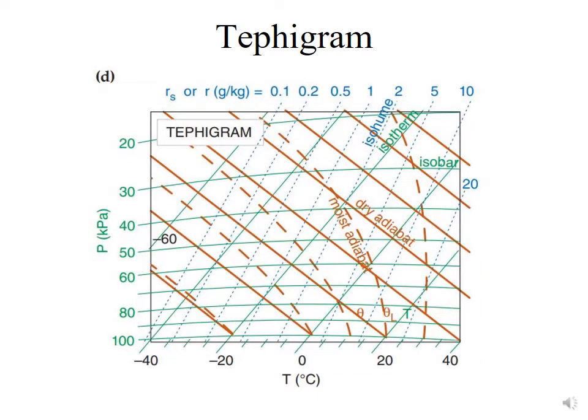A Tephigram is one of four thermodynamic diagrams commonly used in weather analysis and forecasting. The name evolved from the original name, the Tephigram, to describe the axes of temperature and entropy, which is often described with the variable phi.